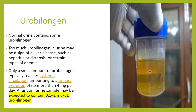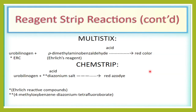Urobilinogen levels can increase due to liver disease, hepatitis, cirrhosis, or certain kinds of anemias. Some amount of bleeding can also cause an increased amount of urobilinogen in the urine.